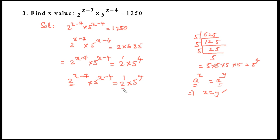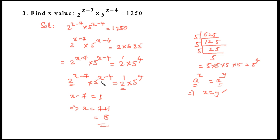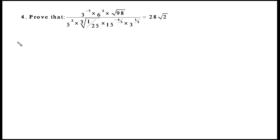Equating the powers of 2: x − 7 = 1, so x = 8. Equating the powers of 5: x − 4 = 4, so x = 8. Therefore x = 8.